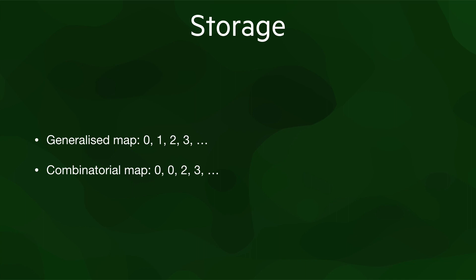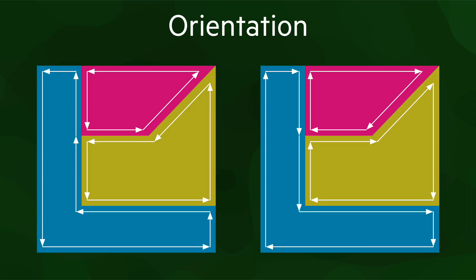Essentially, we need to select one of the vertices to go before the other. In order to do this consistently across all connected cells, we give an orientation to the combinatorial map.